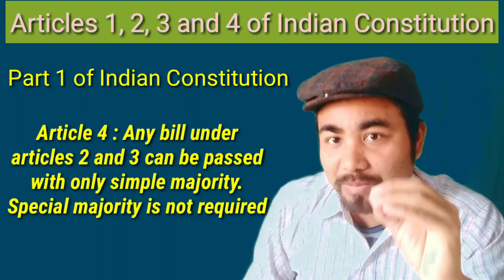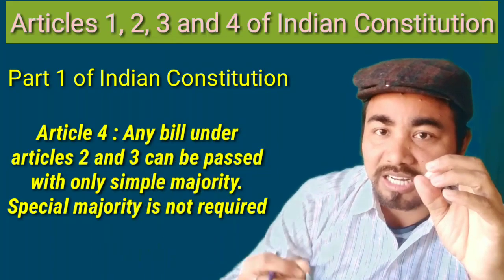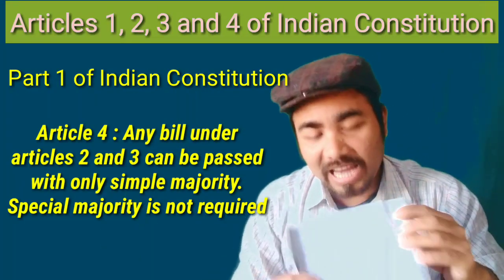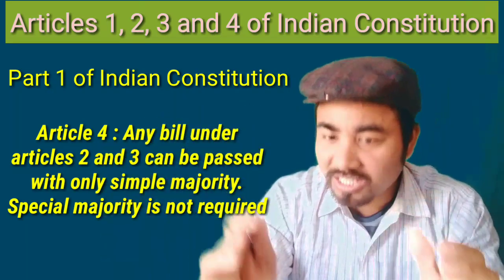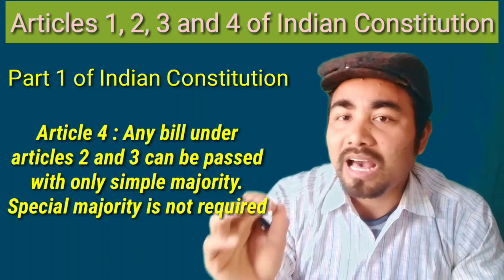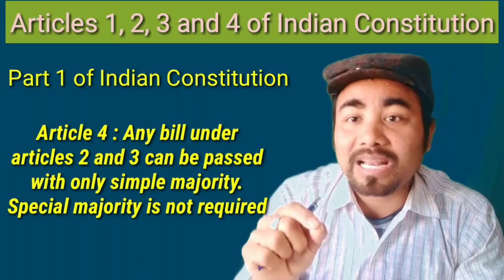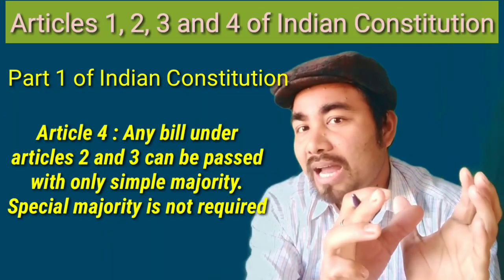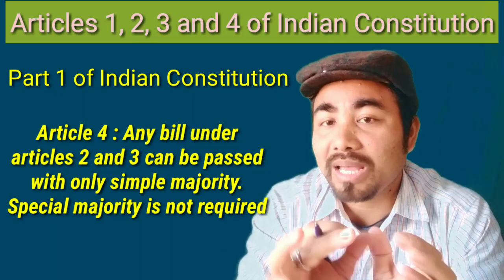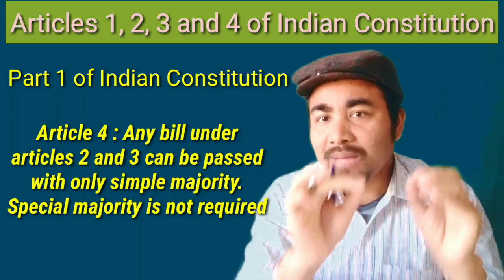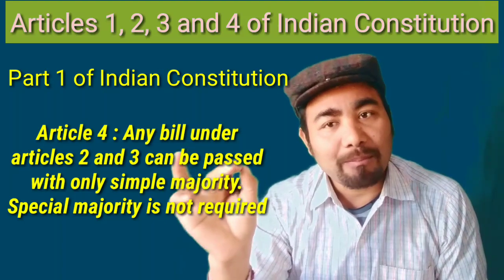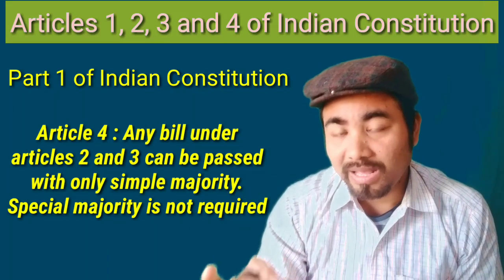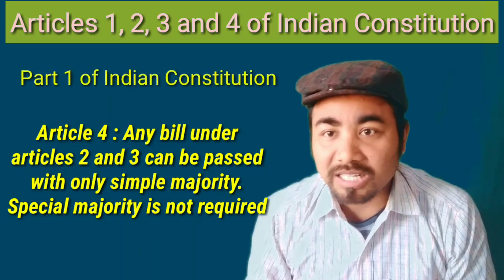Article number 4 deals with laws made under articles 2 and 3. Even Parliament is saying that if you need a law in a state, the law is the only way. Article number 2 and article number 3 are related to state formation. This bill is called — for article 2 it requires a special majority, and for article 3 it requires a simple majority.